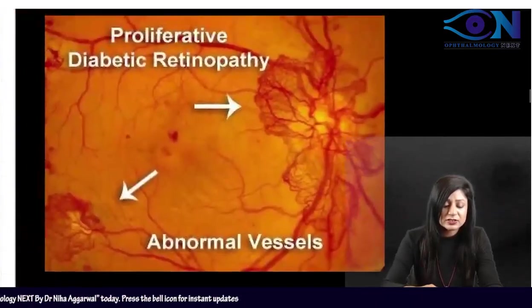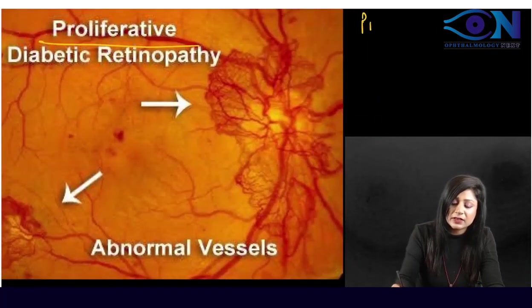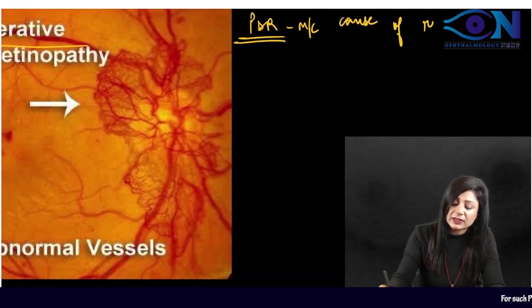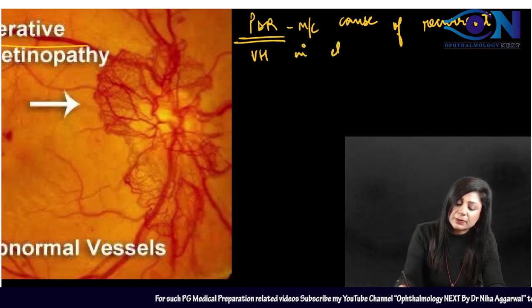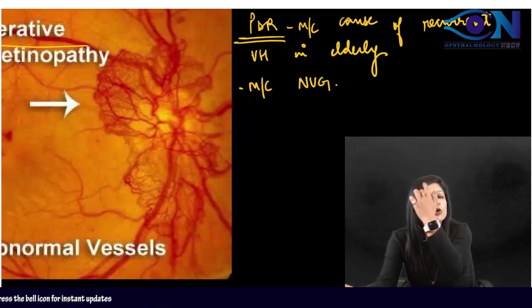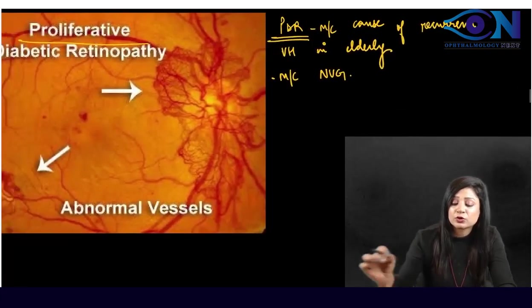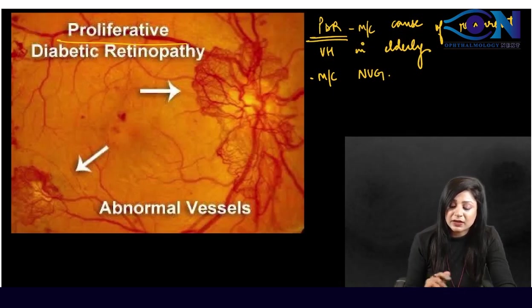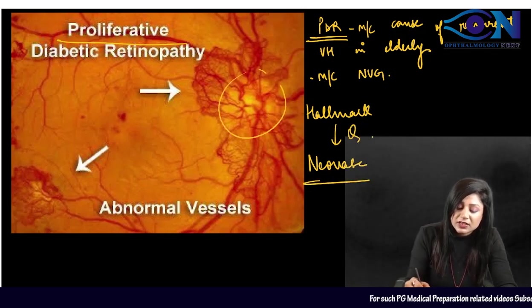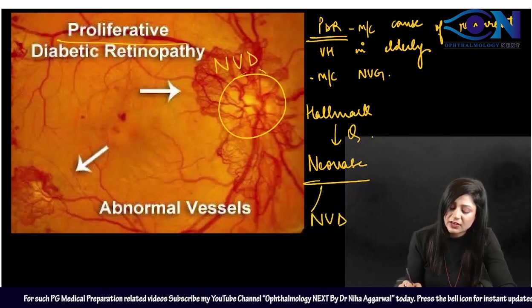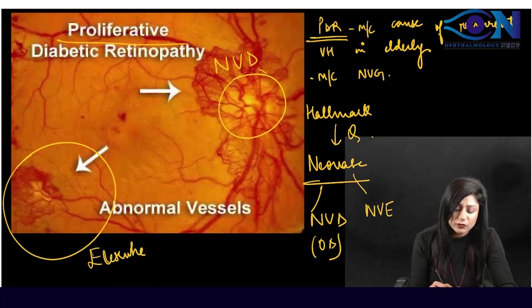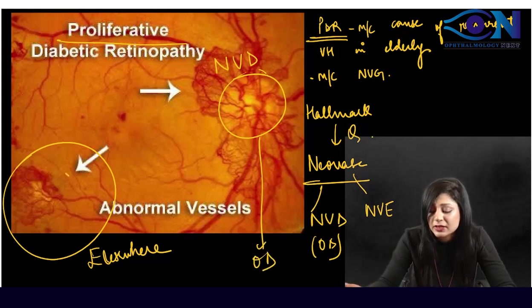This is proliferative diabetic retinopathy (PDR). PDR is the most common cause of recurrent vitreous hemorrhage in elderly people and the most common cause of neovascular glaucoma overall. The hallmark of PDR is neovascularization. You can see the optic disc, so this is NVD (neovascularization at the disc). Neovascularization elsewhere is called NVE. Proliferative diabetic retinopathy is defined by this neovascularization.